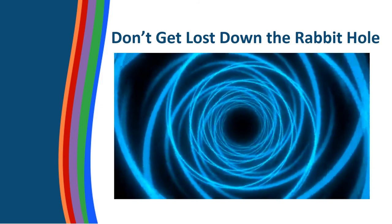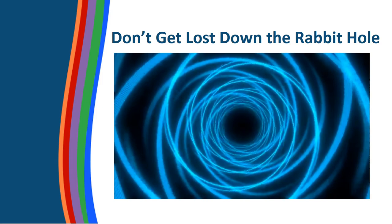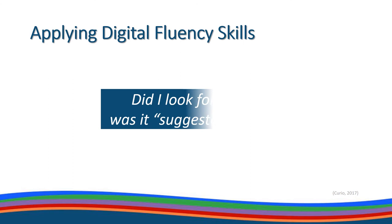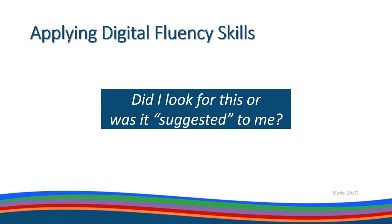Don't get lost down the rabbit hole. We need to be informed and aware and apply our digital fluency skills to help us better navigate the online world. We need to actively learn and apply our digital fluency skills. When we find information online, we need to critically evaluate the quality of that information. We can start by asking: did I deliberately look for this, or was it suggested to me based on an algorithm?